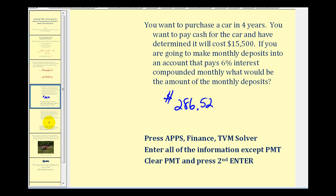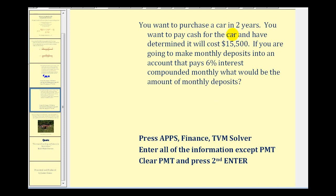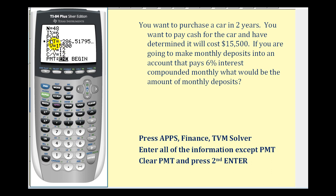For our second example, we're going to look at the exact same situation except change the number of years to two years instead of four years, to determine how much more we would have to save on a monthly basis. We'll go back to the calculator, and using this feature we only have to change one thing: N is now only going to be a total of twenty-four payments, or twelve months times two years.